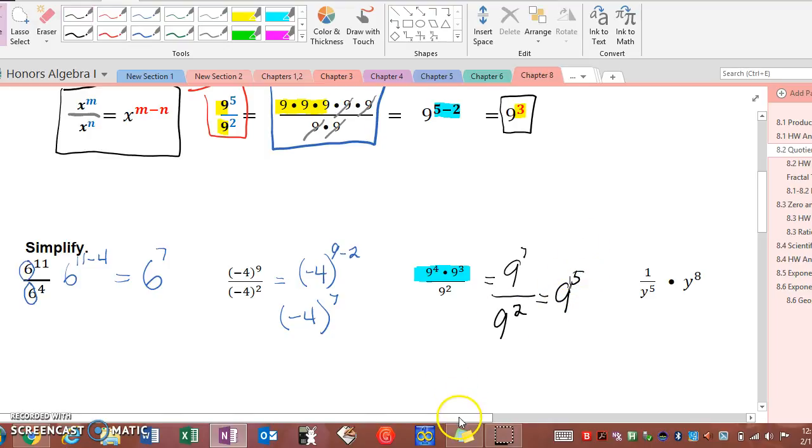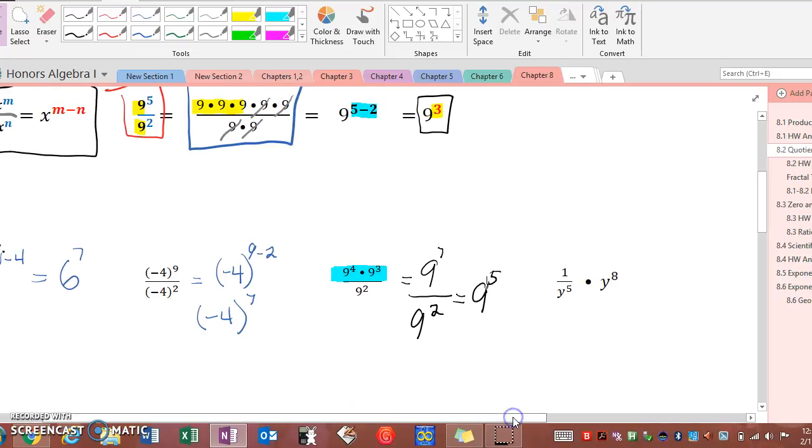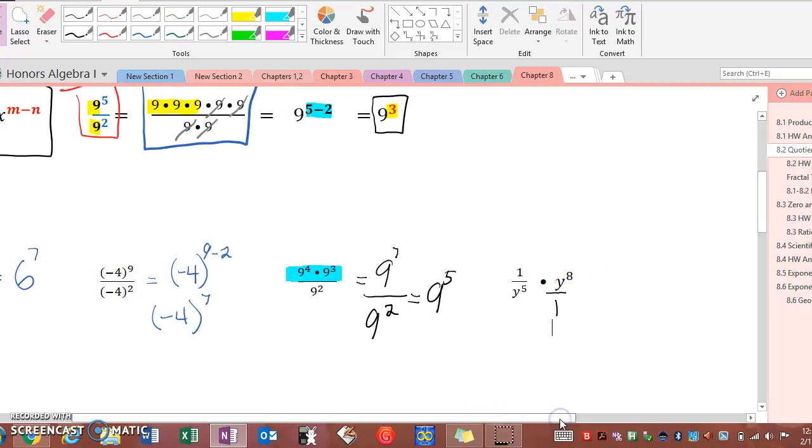Now in the next example we have a multiplication problem. If you feel like you need to make this a fraction, go ahead and do that. Multiplying numerator times numerator, one times y to the eighth is y to the eighth. Y to the fifth times one is y to the fifth, and we have the same base. We can subtract our exponents, eight minus five is three.